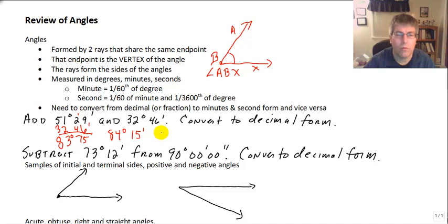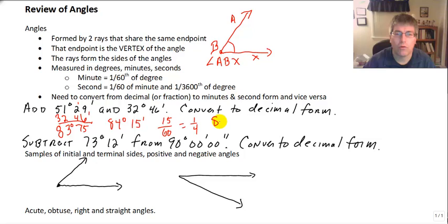Now we want to convert that to decimal form. Well, that 15 is really 15/60ths, which is 1/4th or 0.25 or a quarter. So we have 84.25 degrees. Why don't you do some subtraction and subtract 73 degrees and 12 minutes from 90 degrees, and then convert your answer into decimal form.